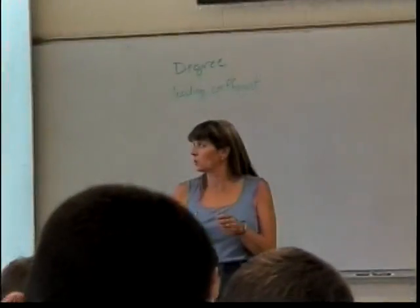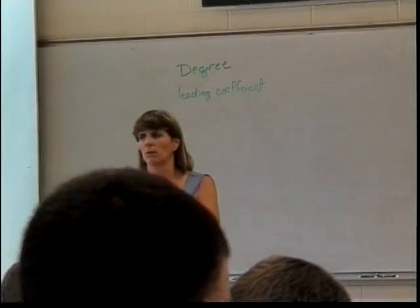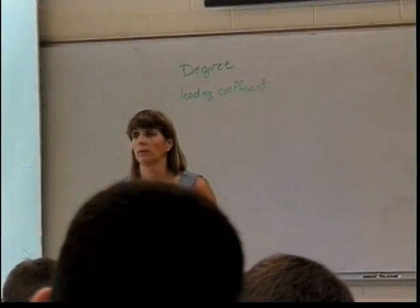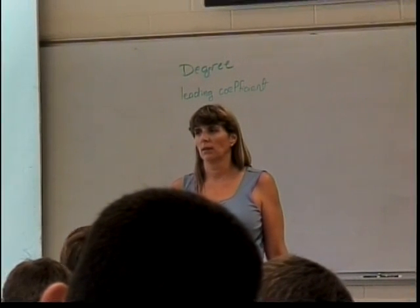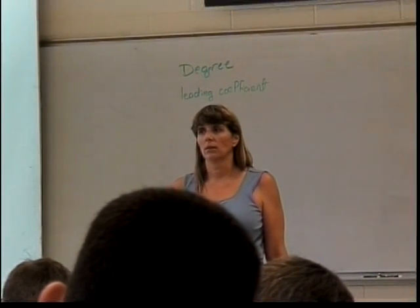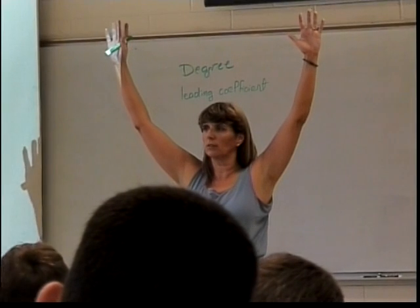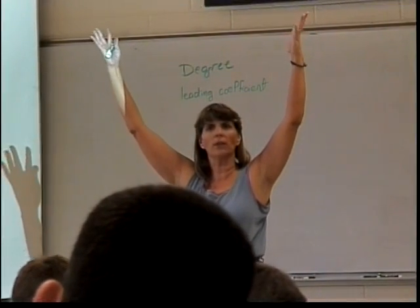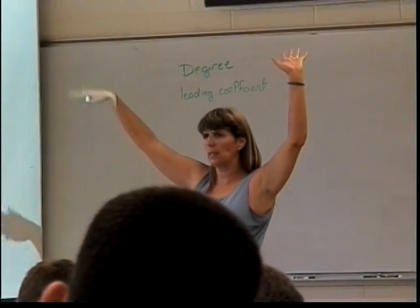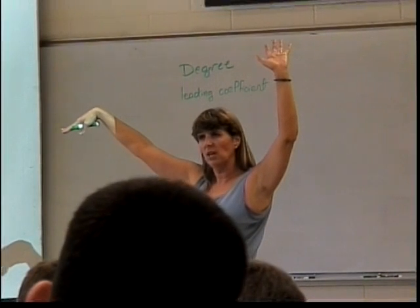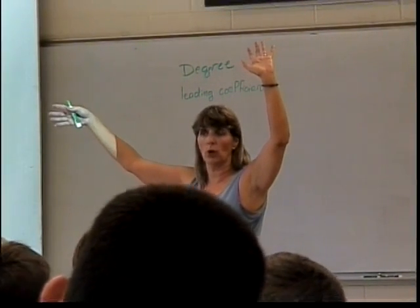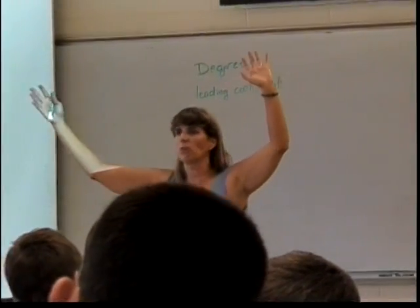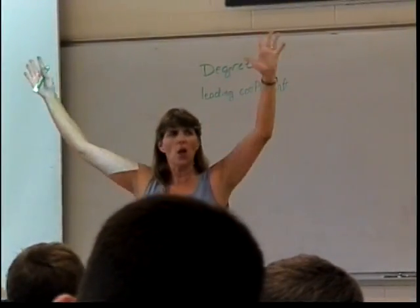So you're graphing x squared, x to the fourth, and x to the sixth. What do they look like? Like the x squared is kind of wide, and it keeps getting narrower. So they look like this. All of them look like this. They're not all parabolas. Only technically is x squared a parabola. But they all look, because you can't be a parabola unless you have a degree of two. So technically the rest of them aren't parabolas, but they all look like this.